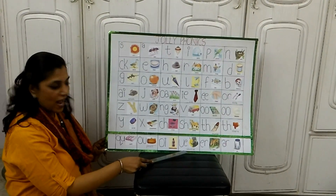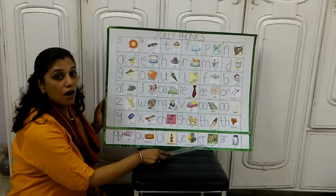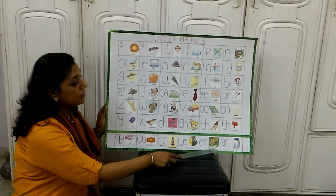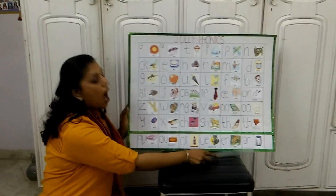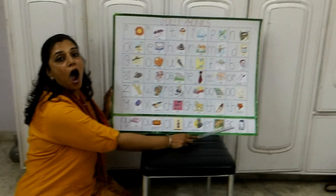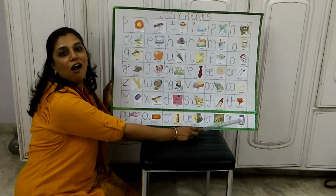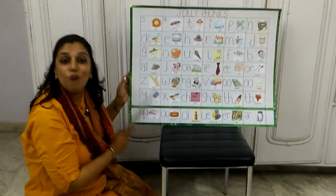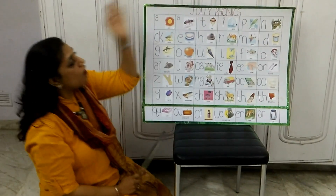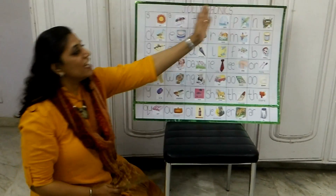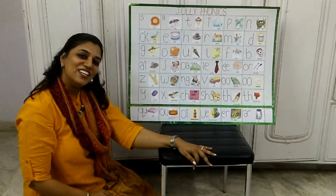U as in statue. ER as in tiger. A as in jar. So these are the 42 sounds of Jolly Phonics. Thank you.